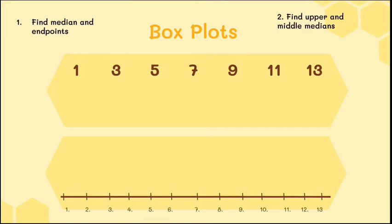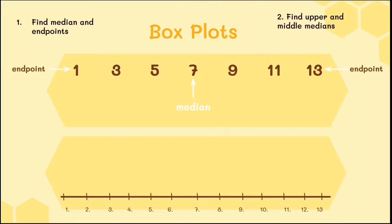Here we have a set of data values already in numerical order. The first step is to find the median and the endpoints. The median is the middle number of the whole data set — if we go to the middle number, we see that it's 7. The endpoints are the minimum and maximum, which are 1 and 13. So we go to our number line and draw the middle line of the box at 7, because that's the median.